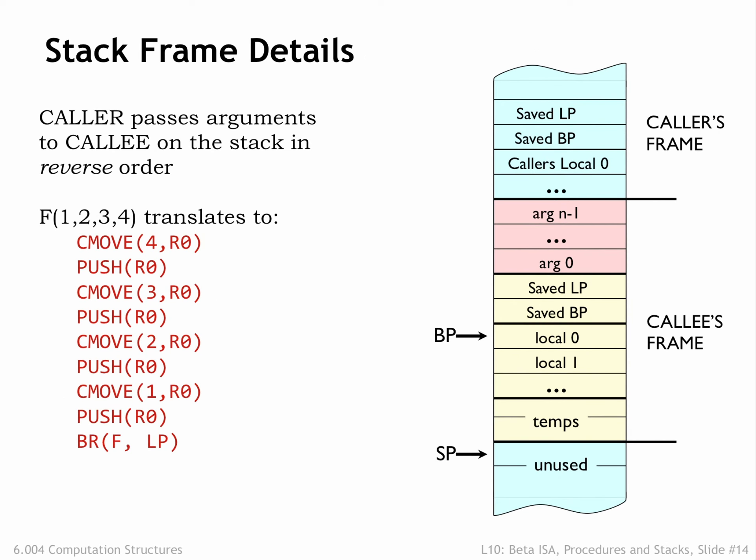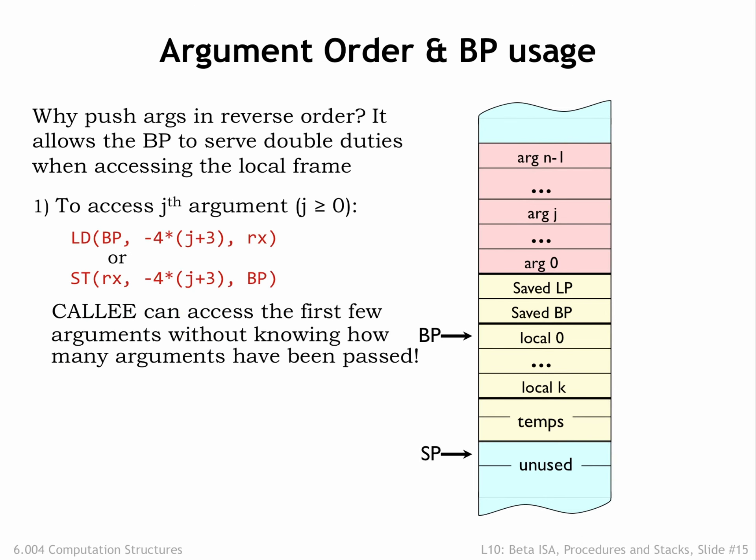Let's return to the question about the order of argument values in the stack frame. We adopted the convention of pushing the values in reverse order, i.e., where the value of the first argument is the last one to be pushed. With the arguments pushed in reverse order, the first argument, labeled arg0, will be at a fixed offset from the base pointer regardless of the number of argument values pushed on the stack. The compiler can use a simple formula to determine the correct BP offset value for any particular argument.